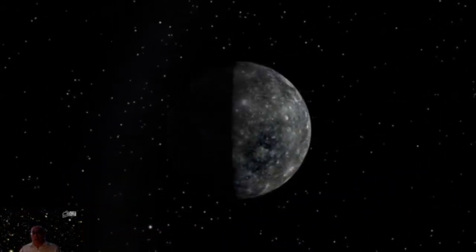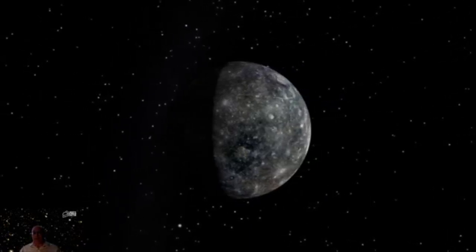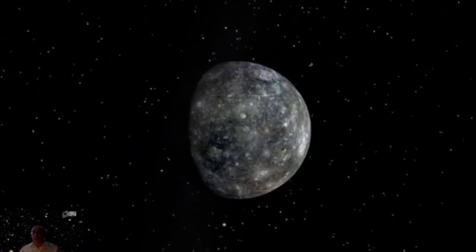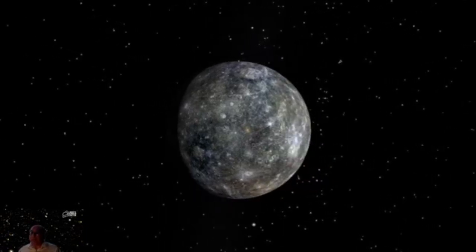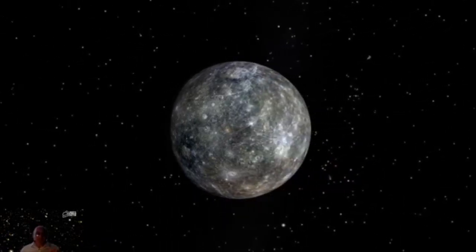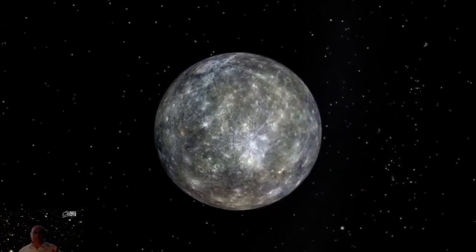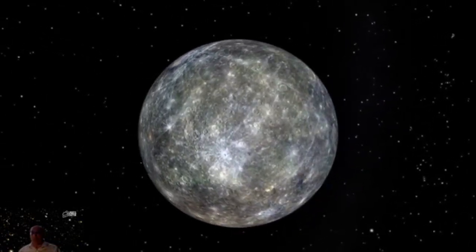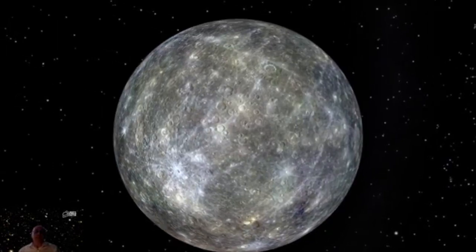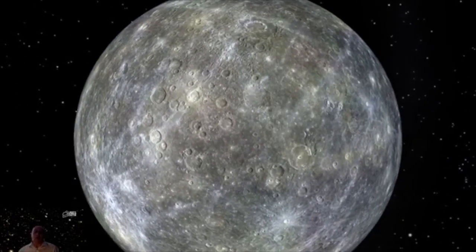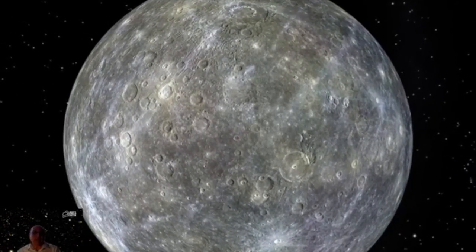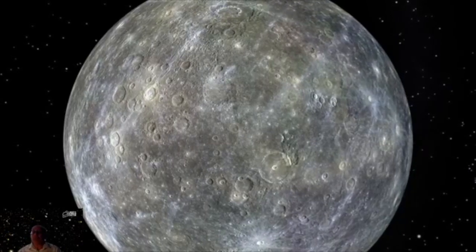While Venus has an excess of atmosphere, Mercury has virtually none. With no air and being near the sun, the daytime high gets really, really high, 750 Fahrenheit. But at night, with no air to hold the heat in, it plunges down to 250 below zero, a thousand degree difference between night and day on the planet Mercury.